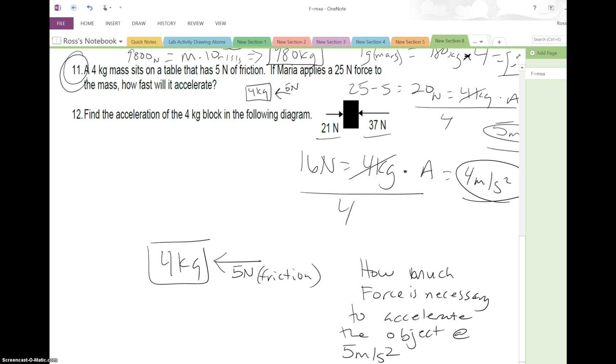Easy because those numbers will work. So we need to find the force necessary to accelerate the object at 5 meters per second squared. So now we need to overcome this friction with enough force to move this 4 kilogram object at 5 meters per second squared. So how do we do that? Well, we're solving for force. So force equals mass times acceleration. So force equals 20 newtons.